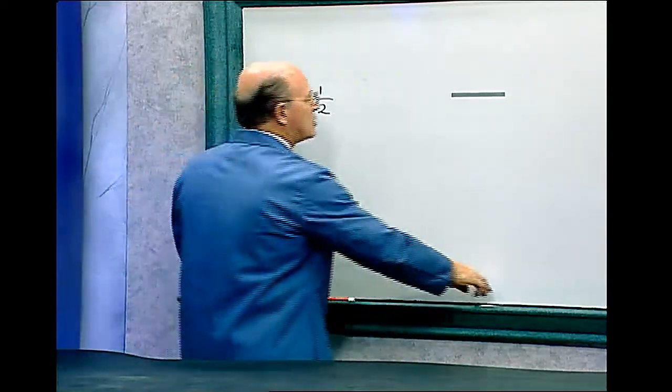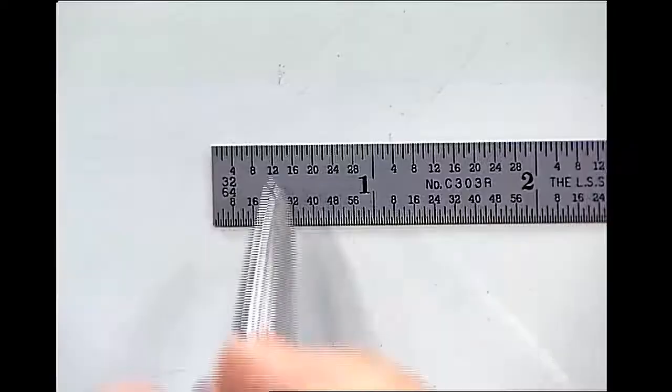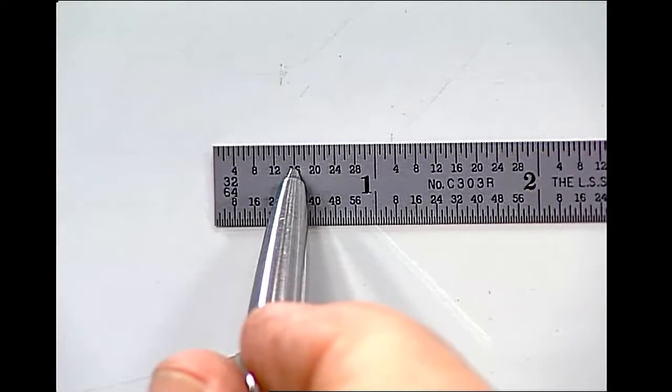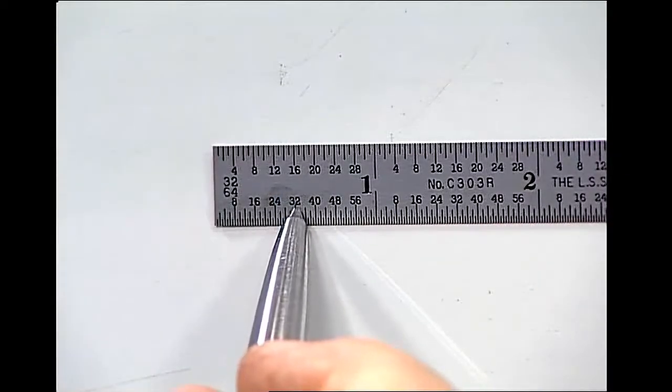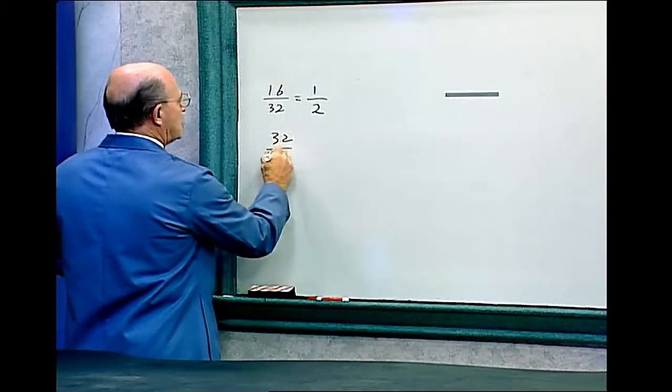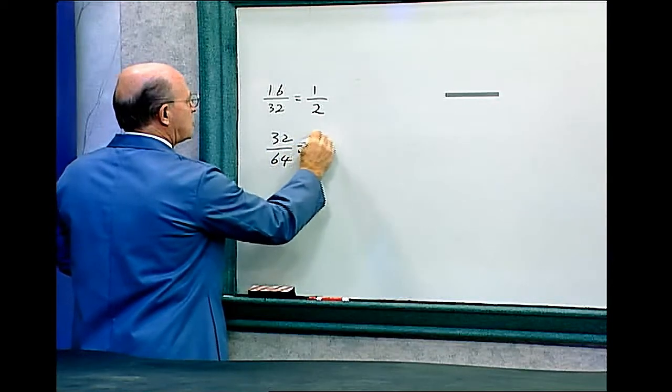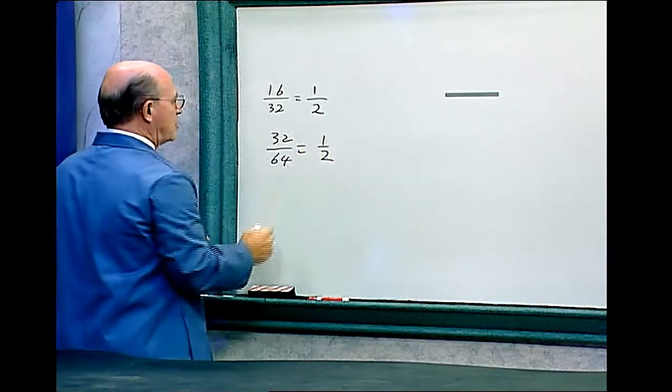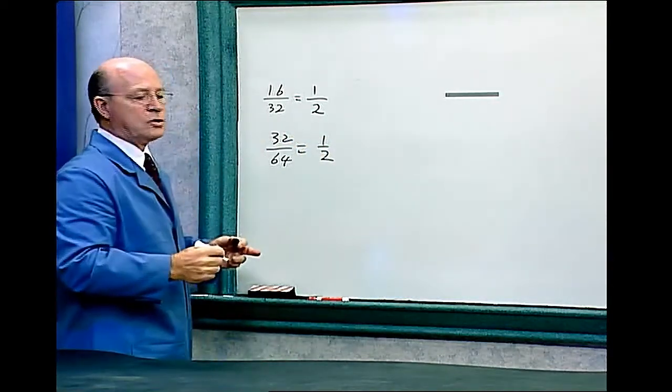Now go back to this ruler again. You see, sixteen thirty-seconds is the same as thirty-two sixty-fourths. So thirty-two sixty-fourths equals also one half. Both sides can be divided by thirty-two.